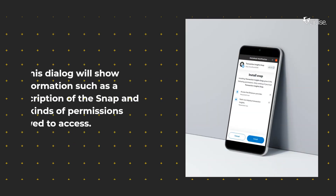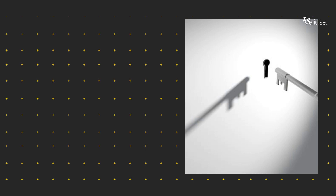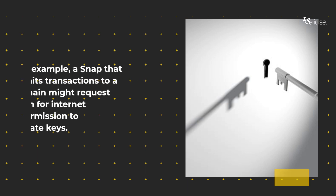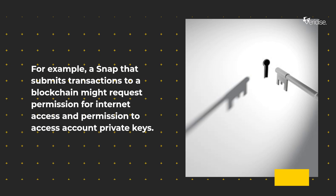This dialog will show information such as a description of the snap and what kinds of permissions it is allowed to access. For example, a snap that submits transactions to a blockchain might request permission for internet access and permission to access account private keys.